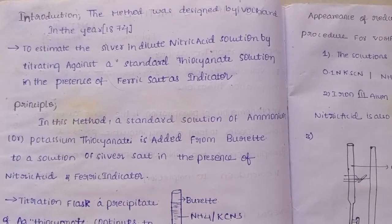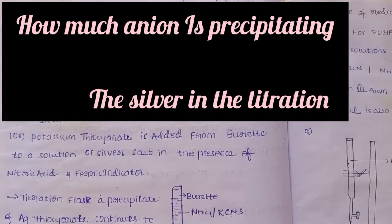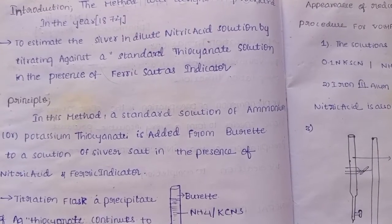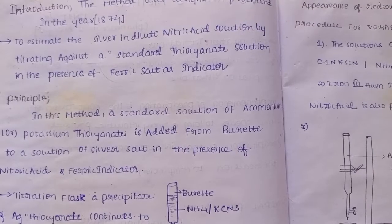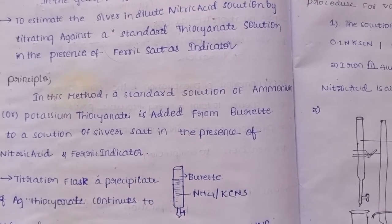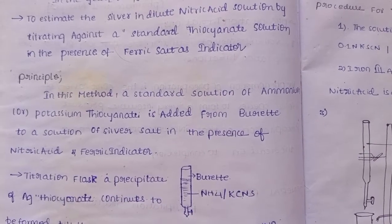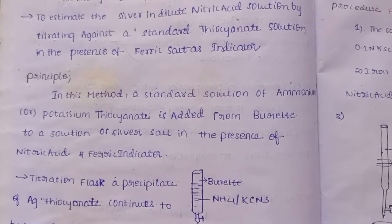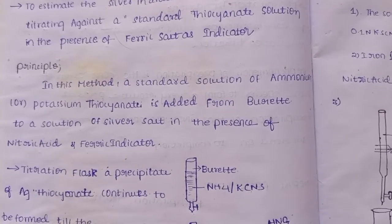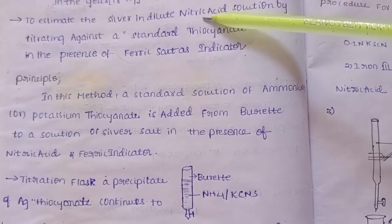Here we are going to estimate the silver in dilute nitric acid — that is dilute HNO3, which is AgNO3 solution — by titrating against a standard thiocyanate solution. The standard thiocyanate solution means it follows IP or British Pharmacopoeia standard values. The titration is carried out in the presence of ferric salt as indicator — that is AgNO3 in dilute HNO3 with a ferric indicator.